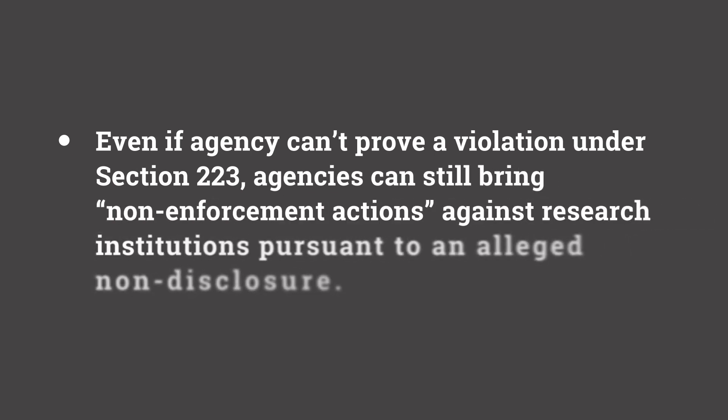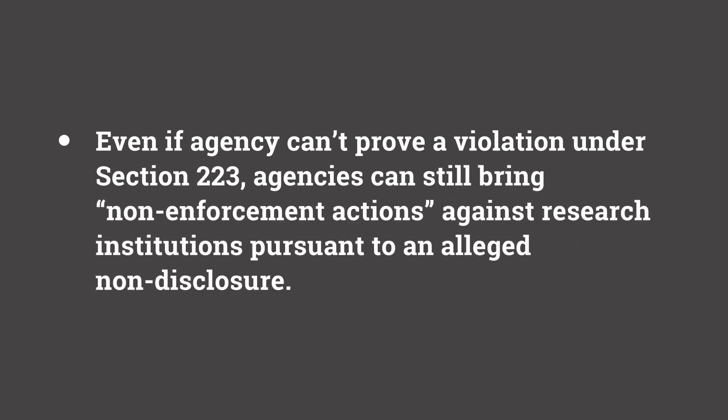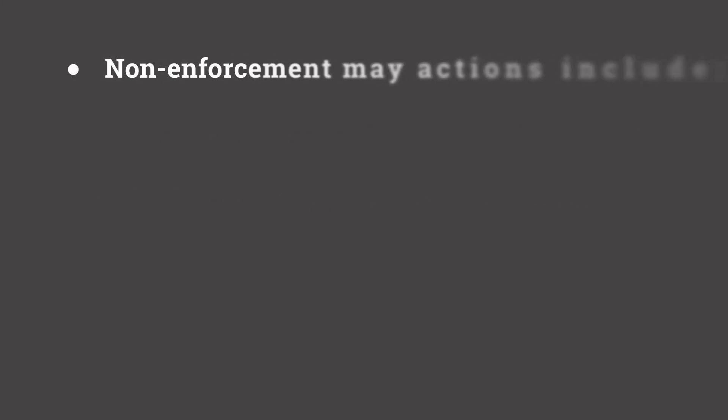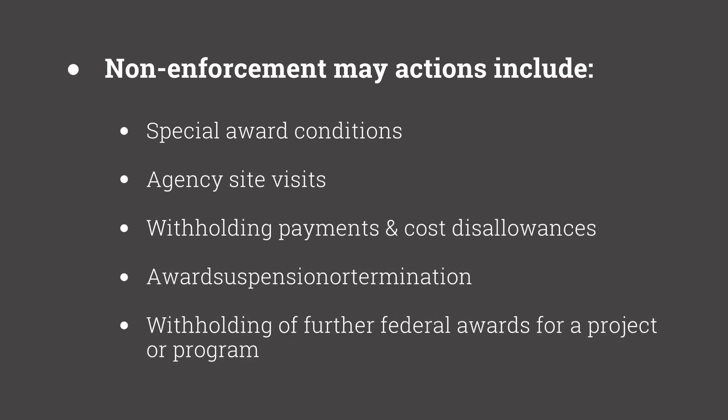Even where an agency cannot meet the knowledge or control requirements of Section 223 in order to bring an enforcement action against an individual or entity, research agencies can still apply non-enforcement actions. Even where an agency cannot bring an enforcement action under Section 223 because it cannot prove that an institution knowingly failed to properly disclose other support or failed to properly inform its employees of the disclosure requirements, the guidance indicates that an agency may still take what it calls non-enforcement actions against the institution for failure to disclose other support properly.